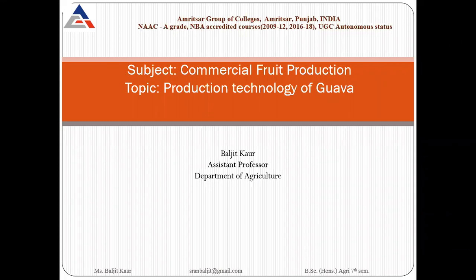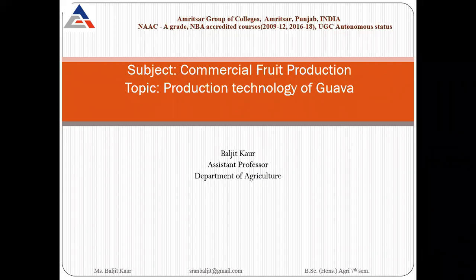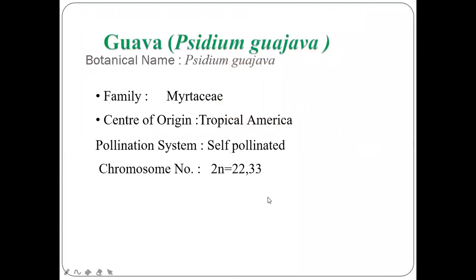Today's lecture is about production technology of guava. We will study the botanical classification of guava, cultivation practices, and pest and disease management. The scientific name of guava is Psidium guajava; it belongs to the family Myrtaceae. The center of origin is tropical America. It is a self-pollinated crop with a chromosome number of 2n = 32 and 33.